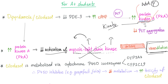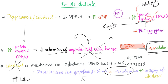Cilostazol is metabolized via cytochrome P450 isoenzymes CYP3A4 and CYP2C19. Therefore, if you take P450 inhibitors — such as the famous grapefruit juice — they will inhibit the metabolism of cilostazol. Nobody metabolizes cilostazol, its plasma level rises, and you get increased toxicity and side effects. So grapefruit juice can increase the toxicity of any drug metabolized by this system, including cilostazol.